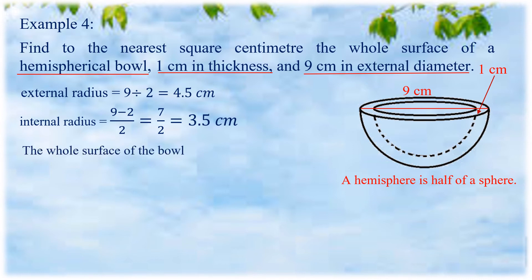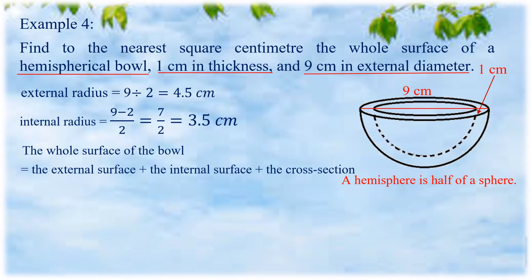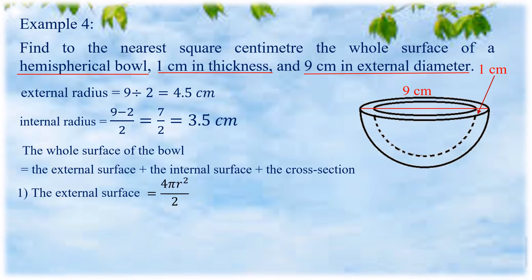To get the whole surface of the bowl, we add the external surface, the internal surface, and the cross-section. For the external surface, we use the surface area of a sphere divided by 2 since a hemisphere is half a sphere, giving the formula 2πR squared. Substituting pi as 22/7 and the external radius 4.5 cm, we get 2 times 22/7 times 4.5 squared, which simplifies to 127.285.